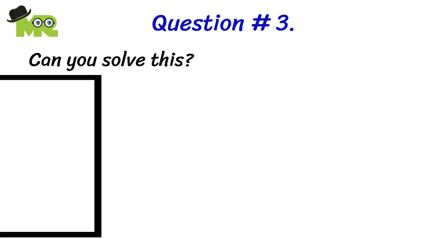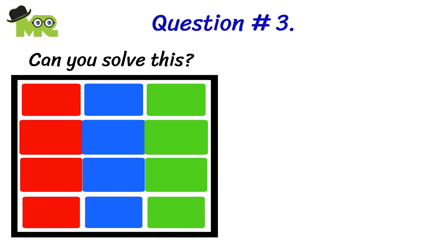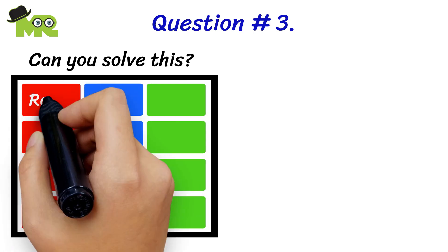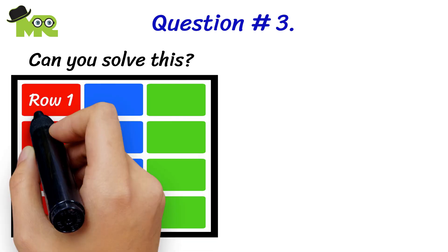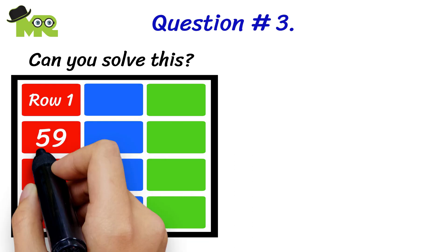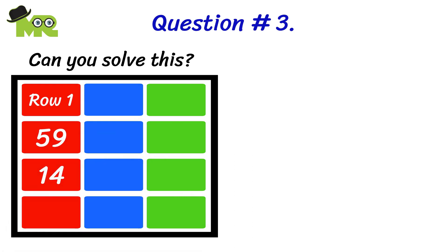Can you solve this? If we have three rows with three boxes in each row, in row one, the first box has the number 59, the second box has 14, and the third box has 5.